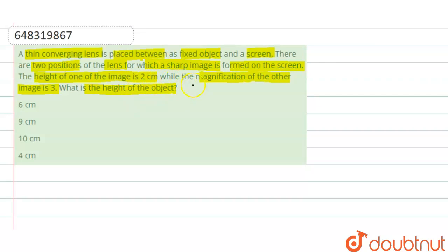and while the magnification of the other image is 3, what is the height of the object? So here we have given that there is a fixed object and a screen. Between the screen and object, a thin converging lens is placed. When we put the lens at some distance - suppose at this position and at this position - for these two positions we are getting sharp images on the screen.